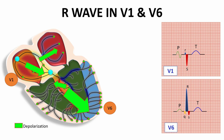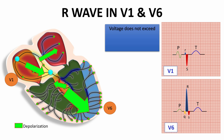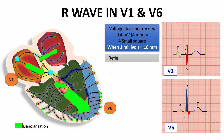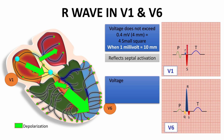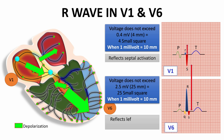Normally, the R wave amplitude does not exceed 0.4 mV, or 4 mm, or 4 small squares in lead V1 when the ECG grid is set to 1 mV equal to 10 mm — because the R wave here reflects septal activation. Normally, the R wave amplitude does not exceed 2.5 mV, or 25 mm, or 25 small squares in lead V6 under the same calibration — because the R wave here reflects left ventricular activation. The R wave is smaller than the S wave in V1, and the R wave is taller than the S wave in V6.